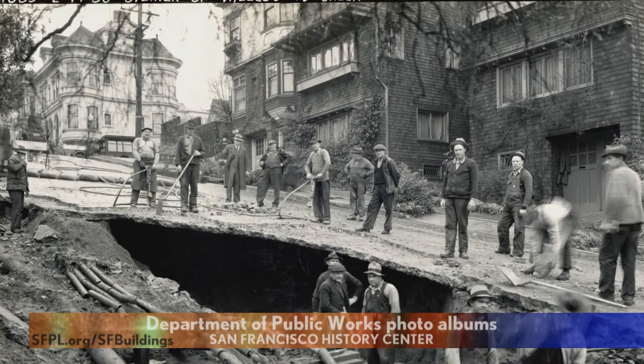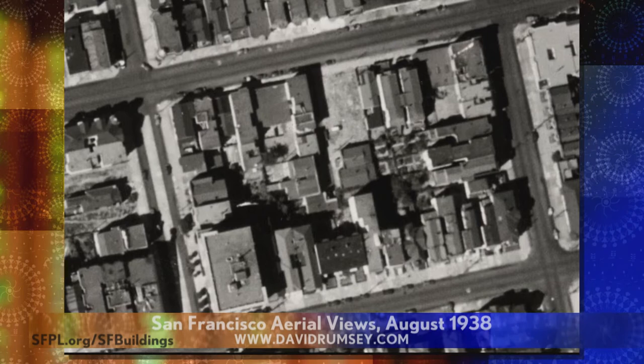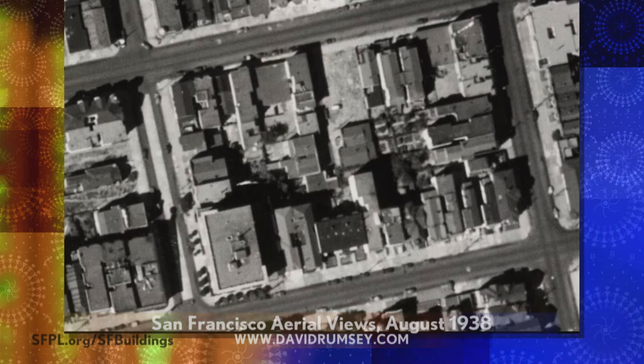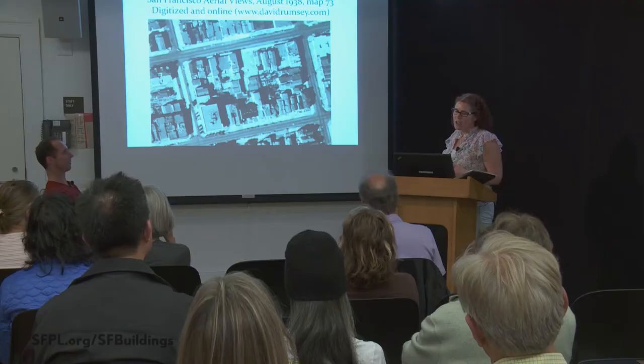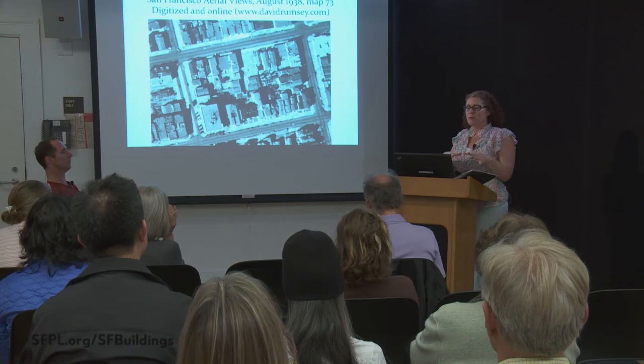We also have some 1938 aerials, which are fun to look at and also practically useful — for example, to argue about a tree or a driveway. If a tree appears in the aerial, you get to keep it because it's historical. The other reason to use these 1938 aerials is that there's a big gap in the Sanborn maps between 1915 and 1950, so if you're trying to figure out something about a structure in that period, these are a good in-between resource.